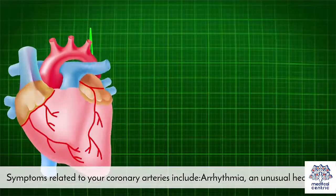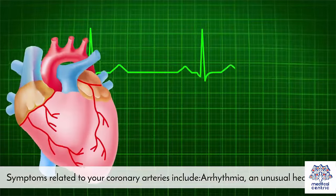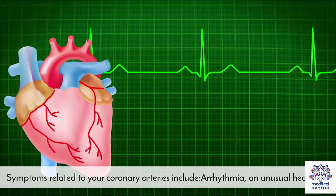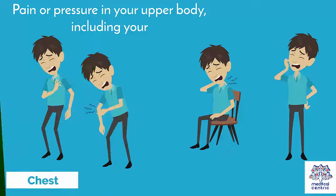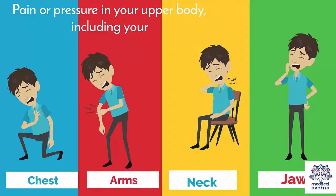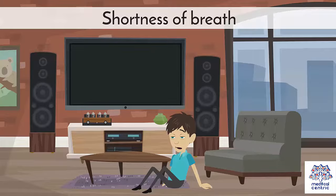Symptoms related to your coronary arteries include arrhythmia — an unusual heartbeat — pain or pressure in your upper body, including your chest, arms, neck, or jaw, and shortness of breath.